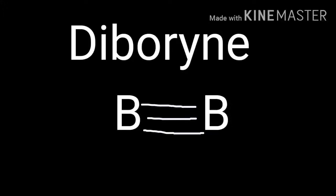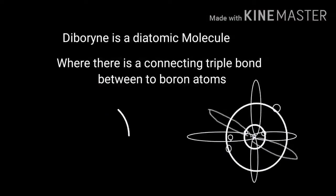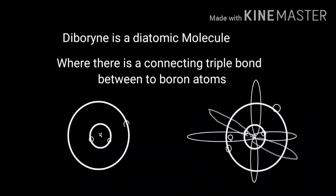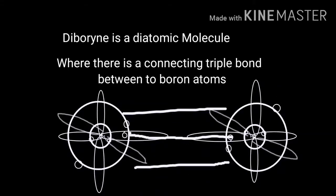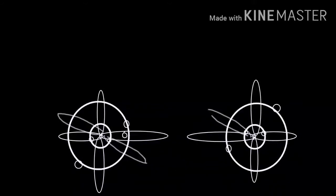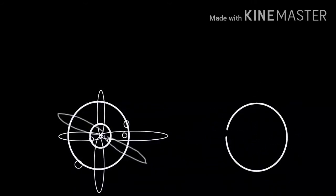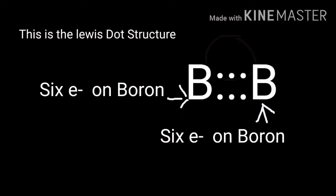Today we will be discussing the structure of Diborine. Diborine is a diatomic molecule where there is a triple bond connecting two boron atoms. It is a linear molecule without any kind of lone pairs. Then there is its Lewis dot structure.